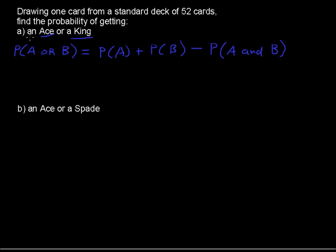So for this first example, an ace or a king. Let's draw a Venn diagram. We have four aces and we also have four kings. These are called mutually exclusive because I'm showing this in a diagram form showing that they're not overlapping. You can't have both an ace and a king on one single card.